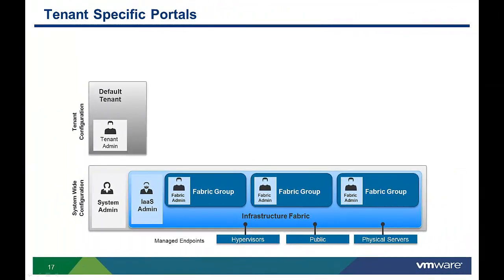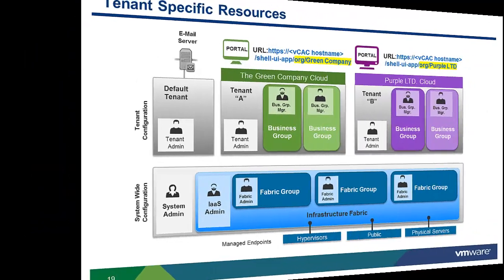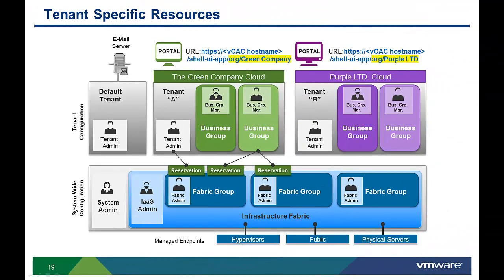If you want to have multiple tenants, each with their own branding, URL, identity store, and email servers, it is best not to use the default tenant, or only use it for attributes which will span multiple tenants. For example, if you want the same email servers for multiple tenants, you can create separate tenants for the Green Company and Purple Limited. Each tenant has a unique branding, portal URL address, and identity store, but shares a common email server as defined in the default tenant. Each tenant and business group can also have their own dedicated or shared infrastructure resources; however, resource reservations will be covered in a separate video.